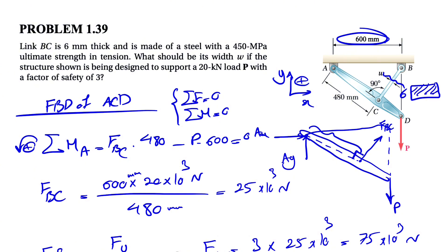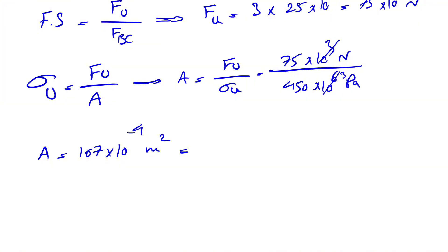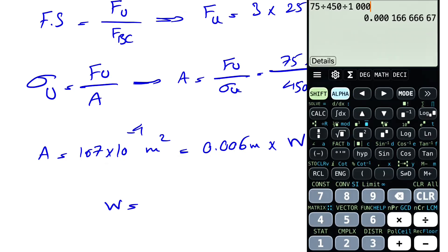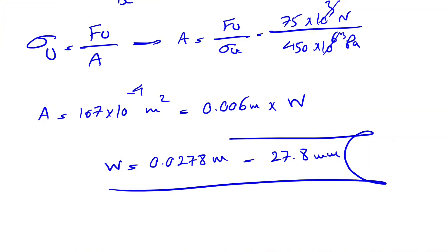So the area that we are talking about is the area of this cross section, which will be a rectangle. One side is 6, which is the thickness, and the width is W that we need to figure out. So the area is basically 6 times W, but keep in mind that our 6 is in millimeter and the area that we have in here is based on meter squared. So we have 0.006. That way we have one side in meter and we're going to get our W in meter too. So W would be basically that value divided by 0.006, so it's going to be 0.0278 meter. And if we want to report it in millimeter, we're going to have 27.8 millimeter, which is going to be the final answer for this question.